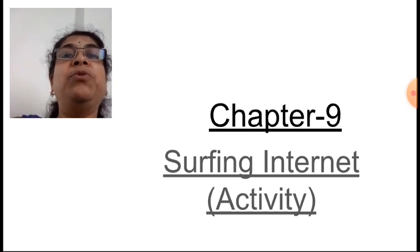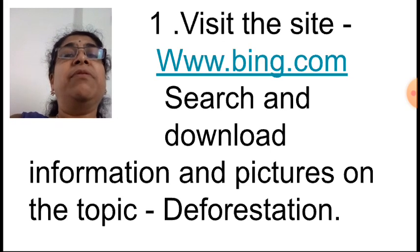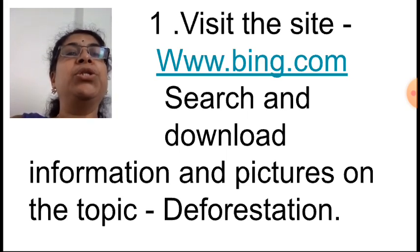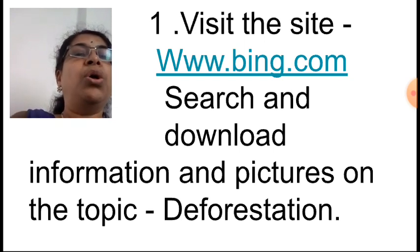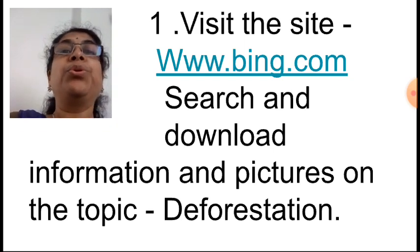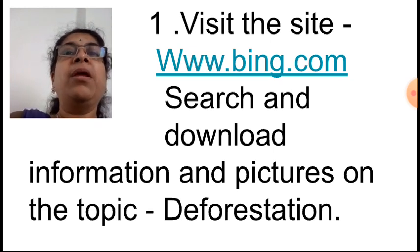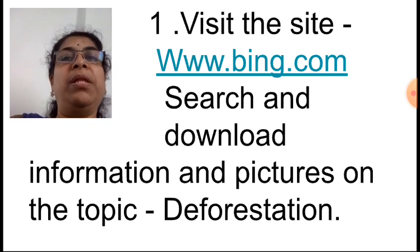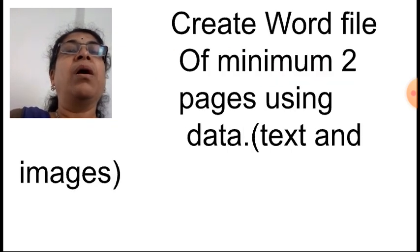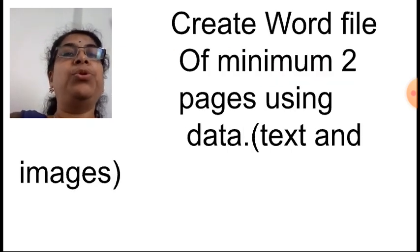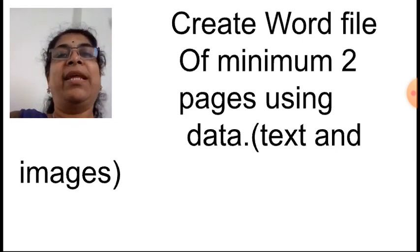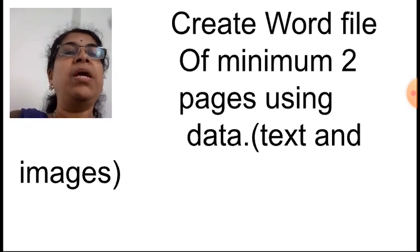Now, how to make use of the internet in your day-to-day life to get information — that practical activity we are going to do. The chapter activity on page number 66 is: visit the site www.bing.com, search and download information and pictures on the topic deforestation. We will copy the information from the site and paste it in a Word file of minimum two pages, including both text and images.